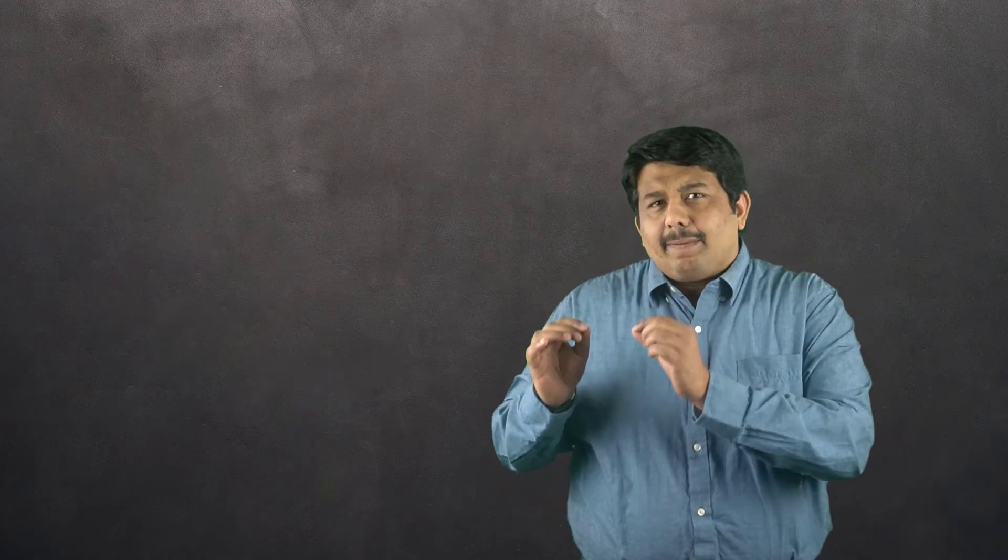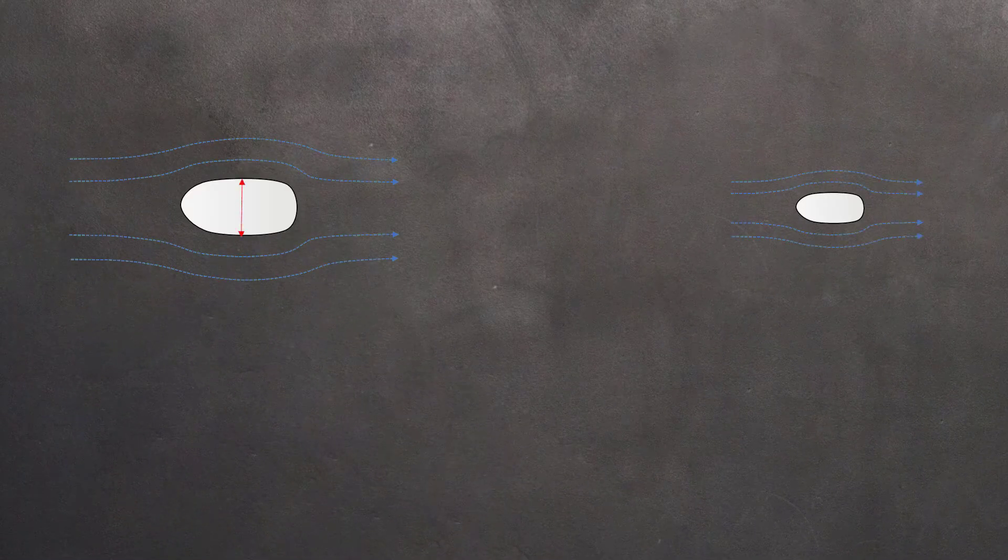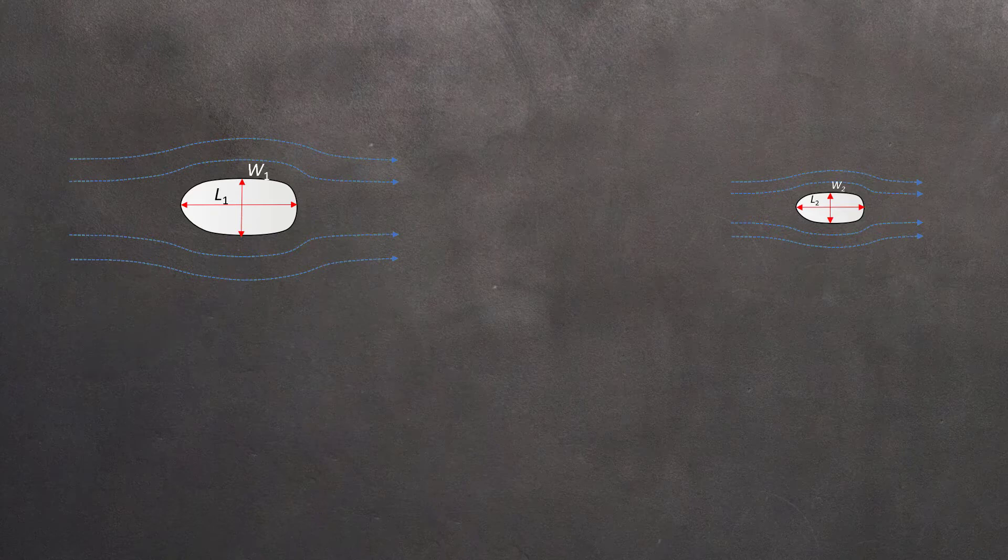Geometric similarity means that two bodies are geometrically similar if they are perfectly scaled versions of each other. Consider the following two objects.